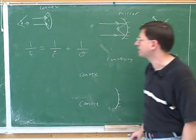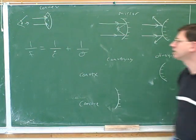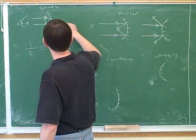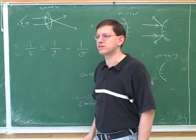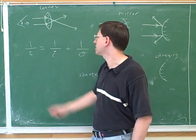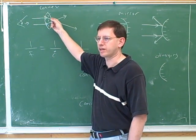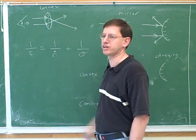And we have to decide whether it would be converging or diverging. Well, it turns out that it makes the light waves bend like this towards the central axis. So this tends to make the outgoing light rays, well, is this converging or diverging?